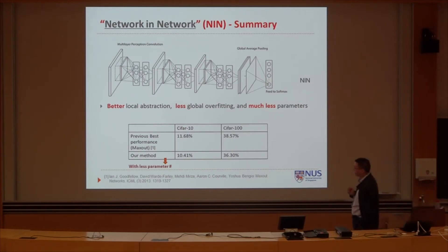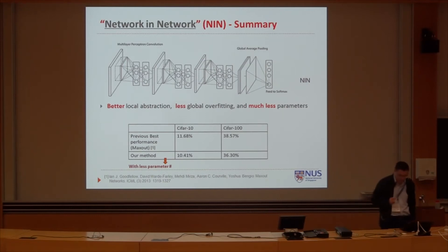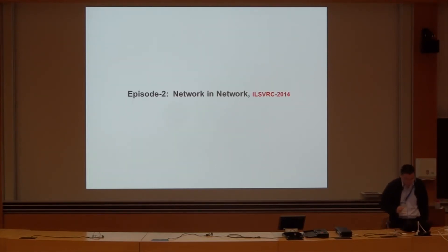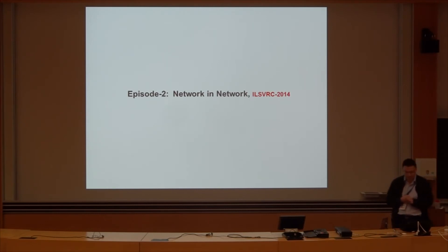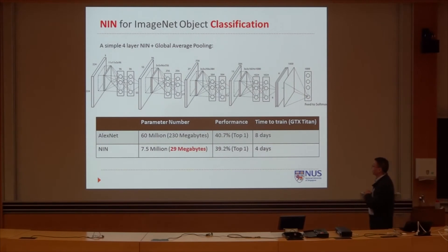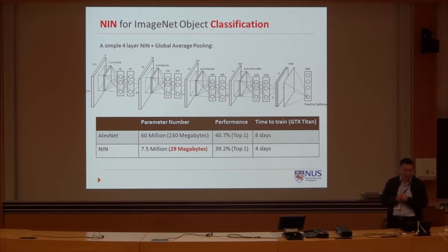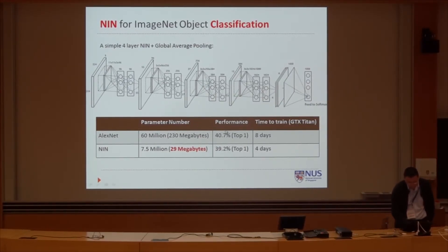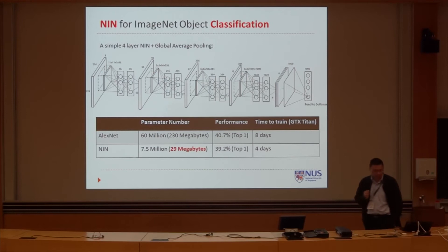As we showed last year, on CIFAR-10 and CIFAR-100, the Network in Network can beat most of the state of the arts with much fewer parameters. This year, we mainly explore how to utilize the Network in Network for different applications on ImageNet and Pascal VOC. If we only use a very simple four-layer Network in Network followed by global average pooling, we can train a model within four days. The accuracy can be increased by about 1.5%, and the parameter count is only one-tenth of the AlexNet.